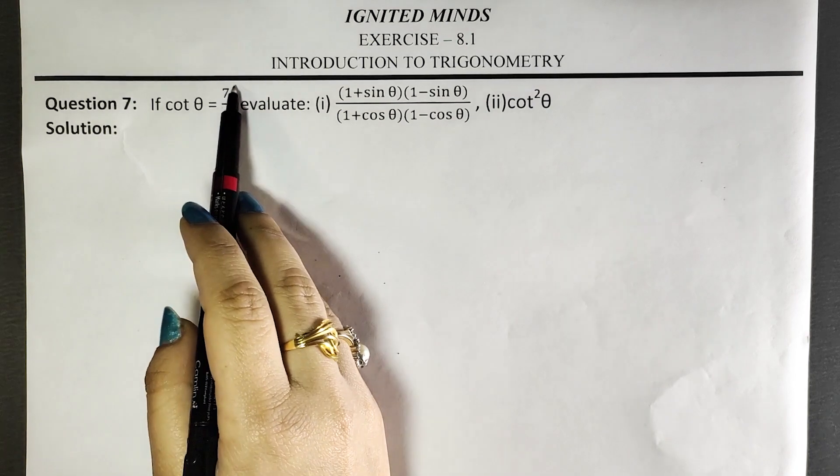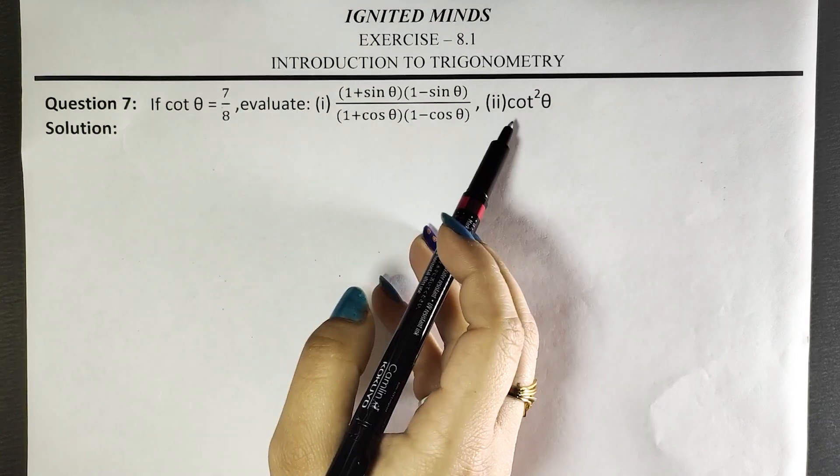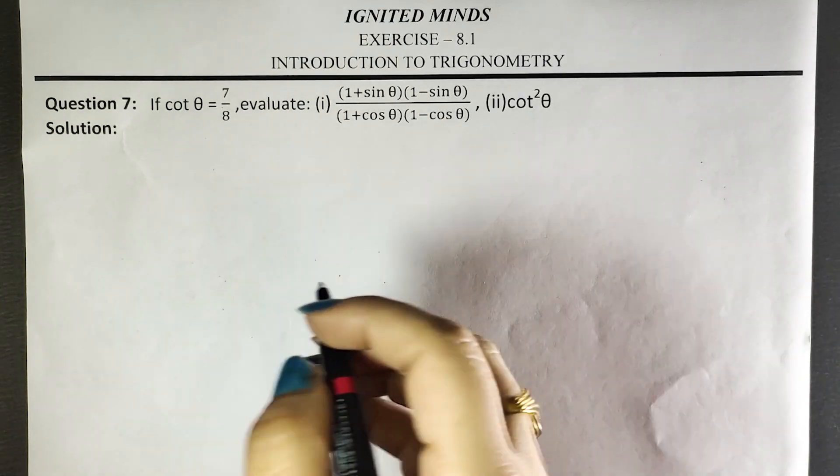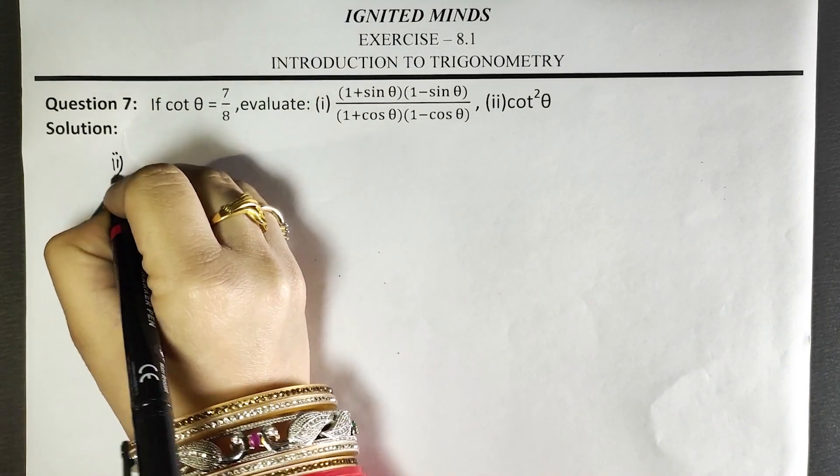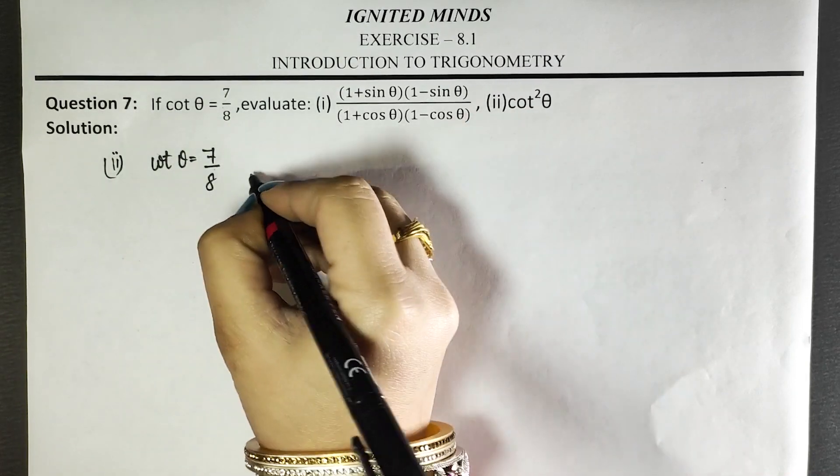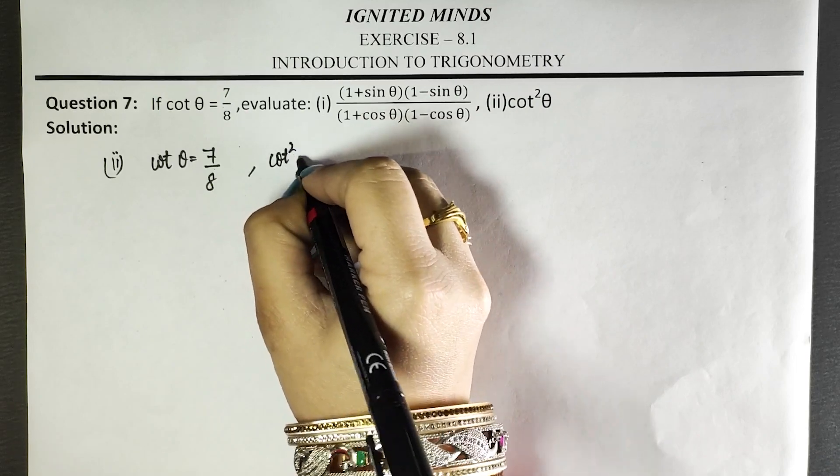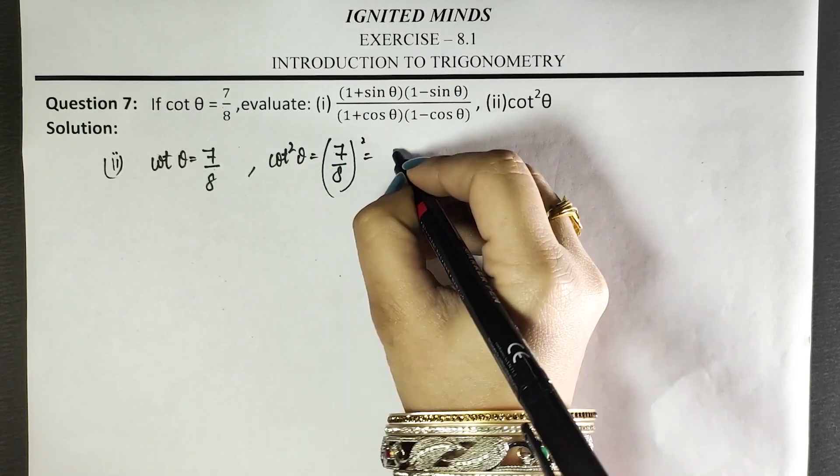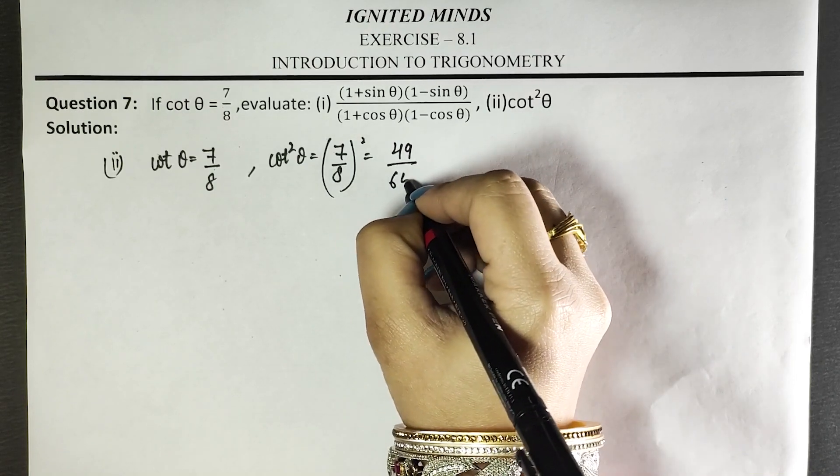So first we have got cot θ equals 7 by 8. And the simple thing is that the second part is cot squared θ. So what will we do with this square? That is 49 by 64.